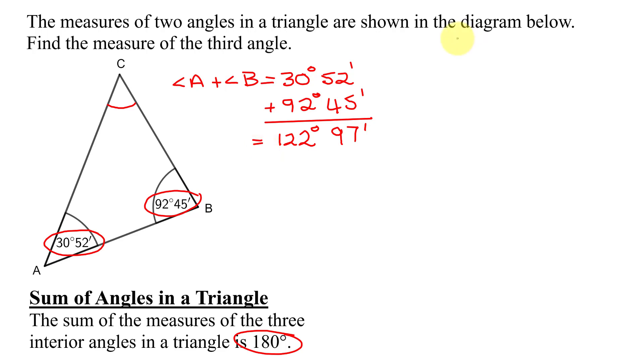But remember, 60 minutes equals 1 degree. So, I'm going to have to simplify that part of my answer. I have 122 degrees plus, instead of 97 minutes, I'm going to write it as 60 minutes plus 37. All I've done is rewrite 97 minutes as 60 minutes plus 37 minutes.